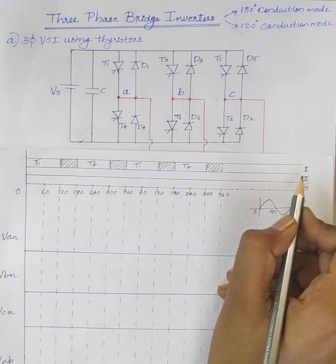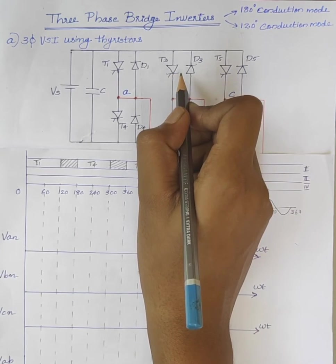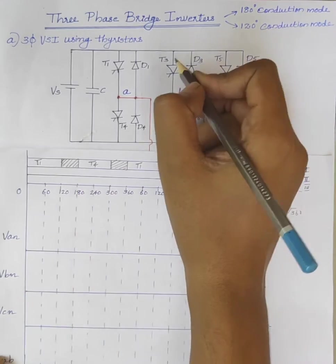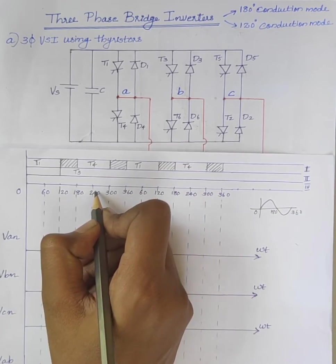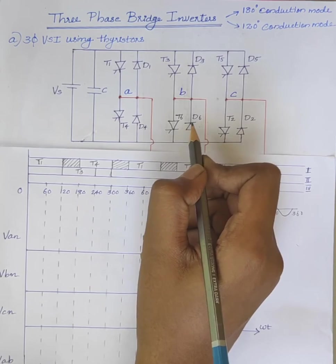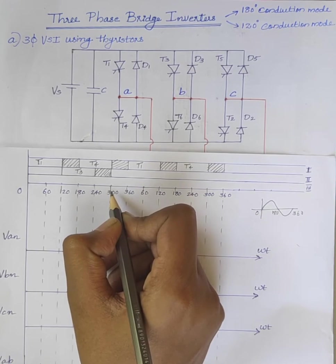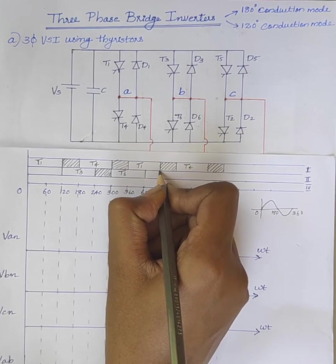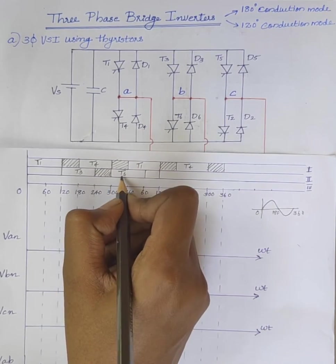Consider segment 2. We already discussed that when T1 starts at 0 degrees, T3 starts after 120 degrees. So at omega T equal to 120 degrees, firing pulses are given to T3. T3 conducts for 120 degrees, that is from 120 to 240 degrees. Then from 240 to 300 degrees, neither T3 nor T6 conducts. At omega T equal to 300 degrees, firing pulses are given to T6, and it conducts for 120 degrees. From 60 to 120 degrees, both T3 and T6 are open.